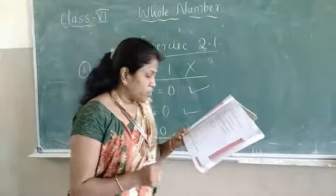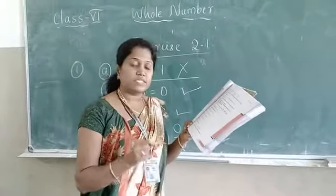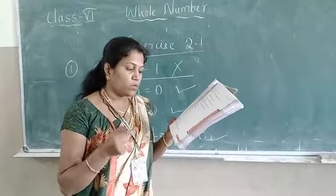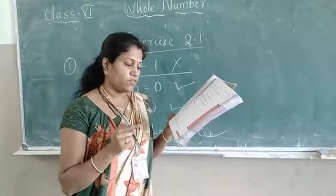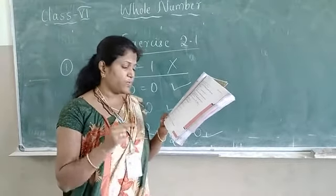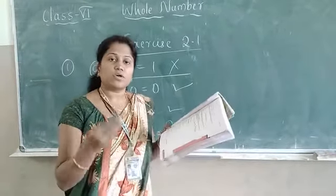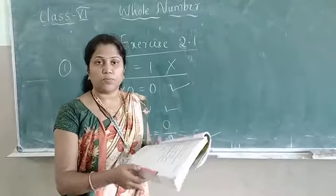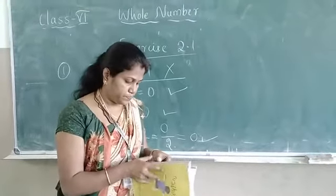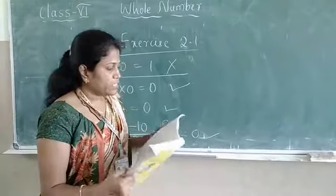Next question: if the product of 2 whole numbers is 0, can we say that 1 or both of them will be 0? Justify through example. You only solve that with 2 whole numbers, okay.